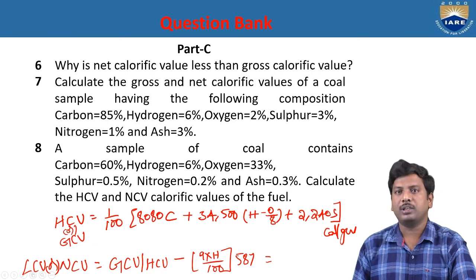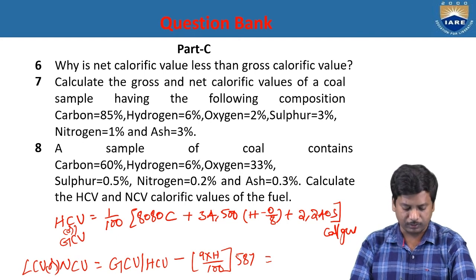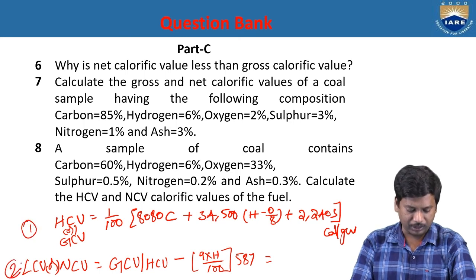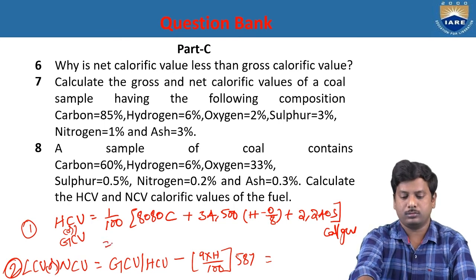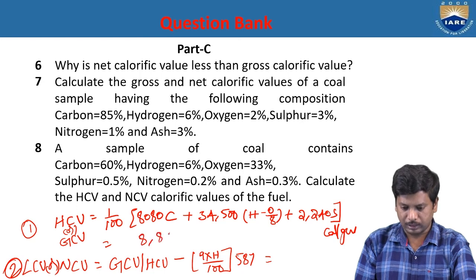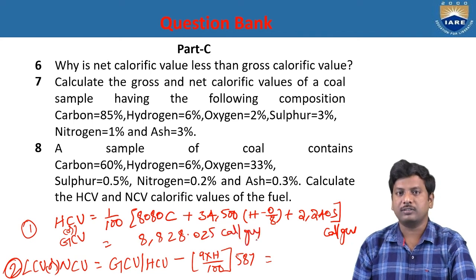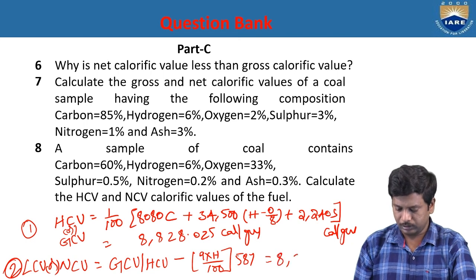For the eighth problem, a synthetic coal contains: C = 60%, H = 6%, O = 33%, S = 0.5%, N = 0.2%, ash = 0.3%. Calculate the GCV and LCV using the same formulas. GCV = 8,828.025 cal/g and LCV = 8,458.21 cal/g.